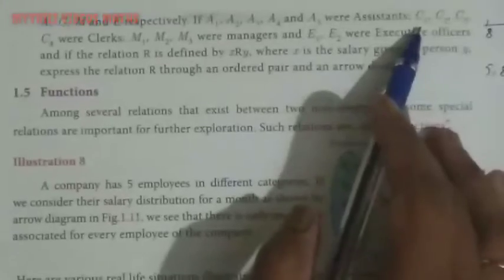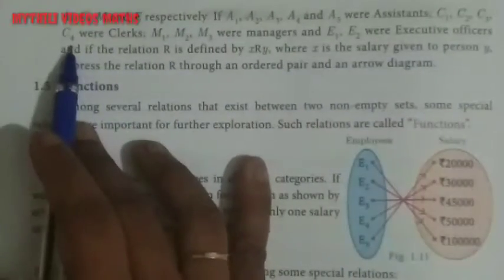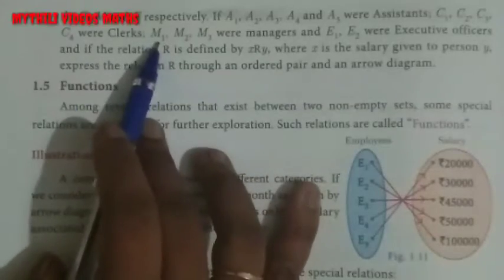A5 - so 5 assistants are there. Then clerks C1, C2, C3 - 4 clerks are there. And then managers M1...